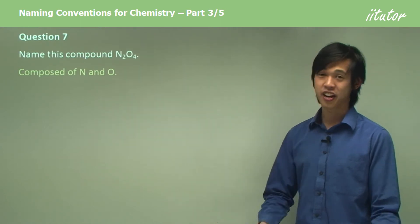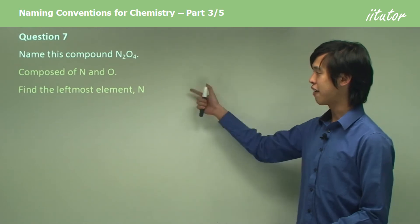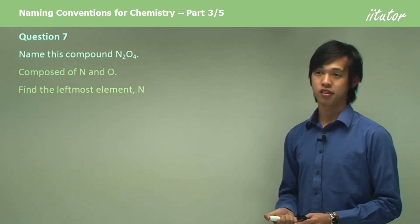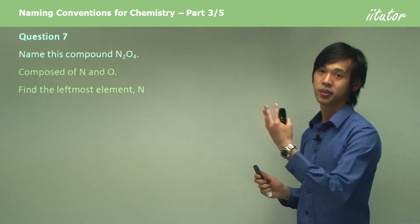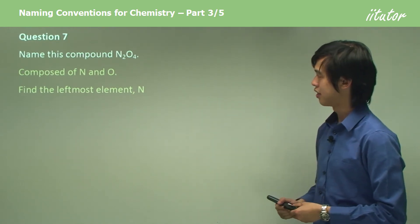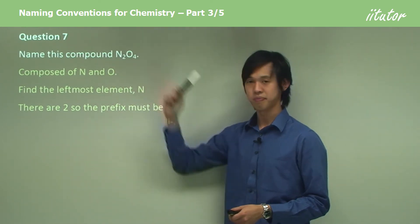So, it's composed of N and O. Simple. Now, if you look on your periodic table, the leftmost element is nitrogen. So, look on your period, they should be sitting right next to each other, and the leftmost one will be nitrogen. And so there, and there are two of these nitrogens, right? There's two.